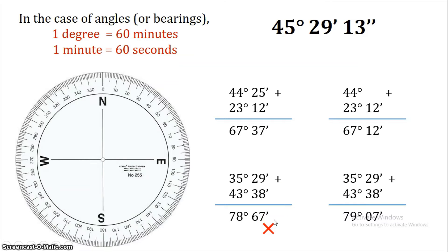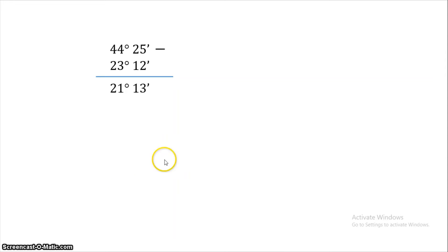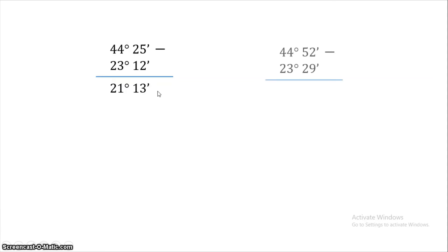Now, how do we subtract angles? For example, 44 degrees 25 minutes minus 23 degrees 12 minutes. We calculate: 5 minus 2 is 3, 2 minus 1 is 1, 4 minus 3 is 1, 4 minus 2 is 2, giving 21 degrees 13 minutes. Next example: 44 degrees 52 minutes minus 23 degrees 29 minutes.